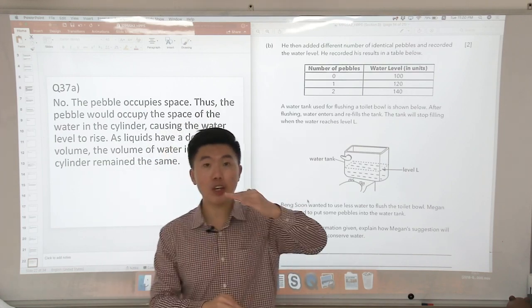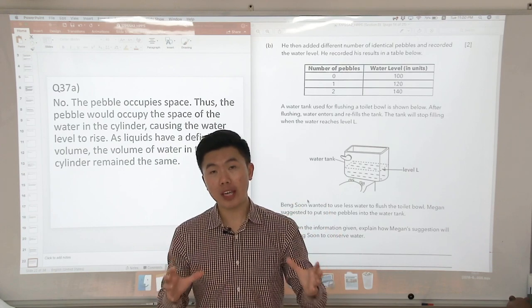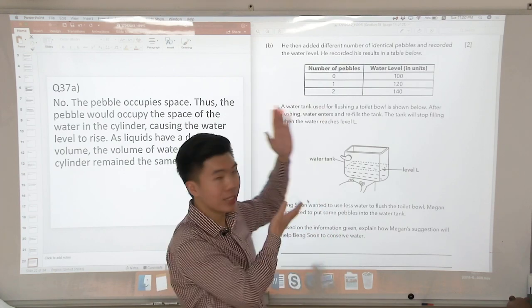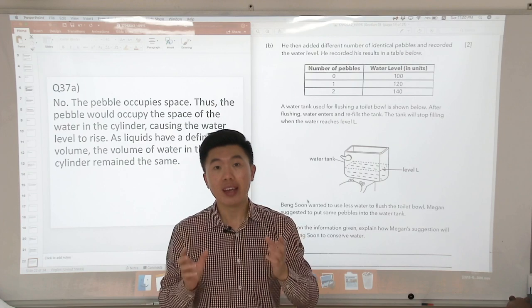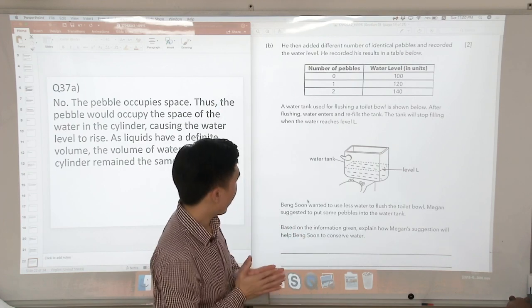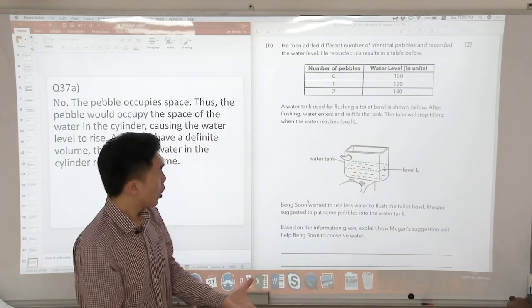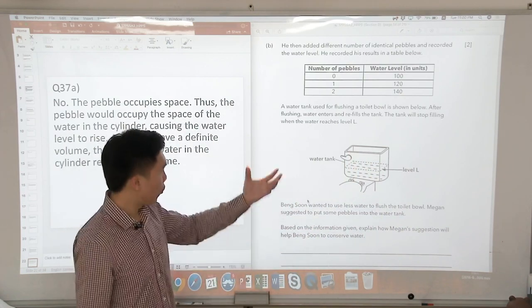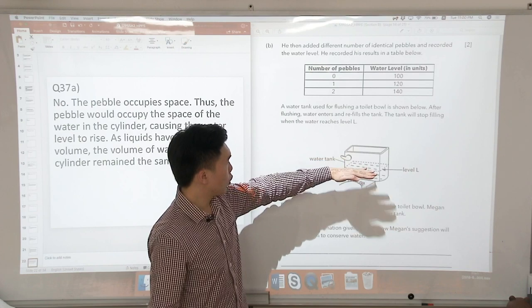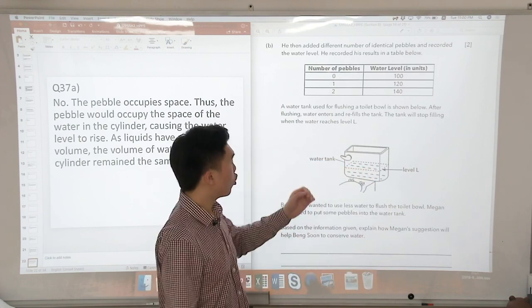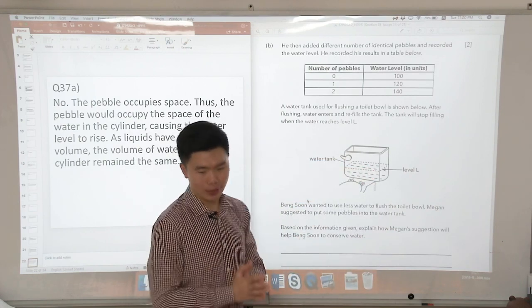But we also said that when the water level increased, the volume of water in the tank, or in this case the cylinder previously, remained the same. So in this case, if we were to put more pebbles into the water tank, the amount of water needed to fill the water tank to water level L, it will be less.